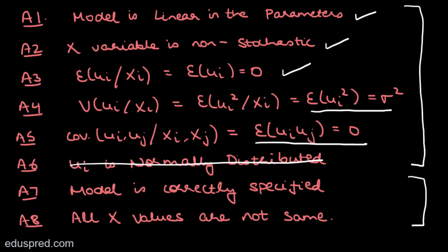This means if you encounter a situation where homoscedasticity does not hold — that is, if there is heteroscedasticity — then you cannot use this formula to calculate Var(B2). Similarly, if the assumption of no autocorrelation is not satisfied, you cannot use this formula.